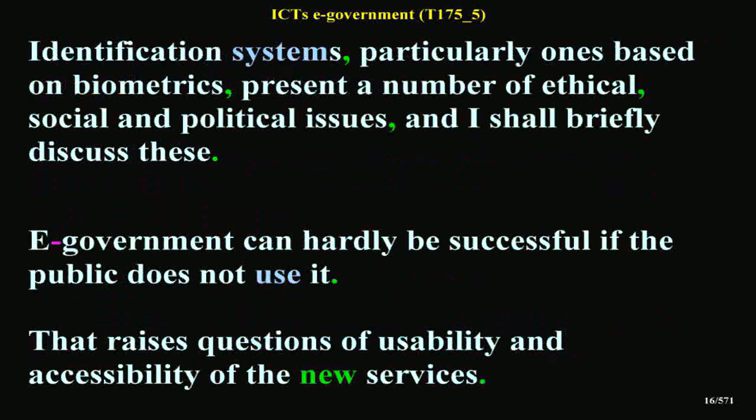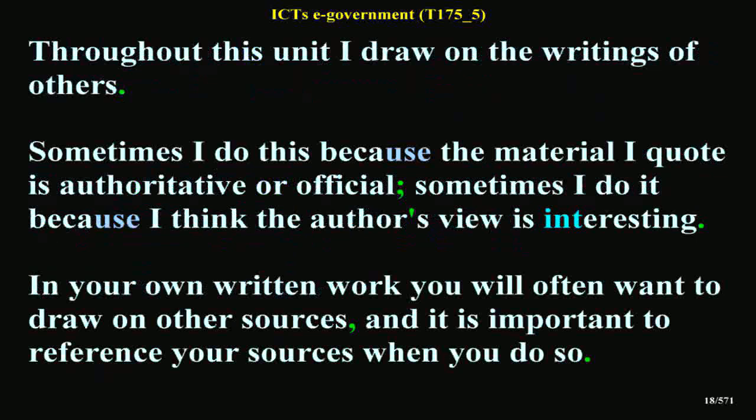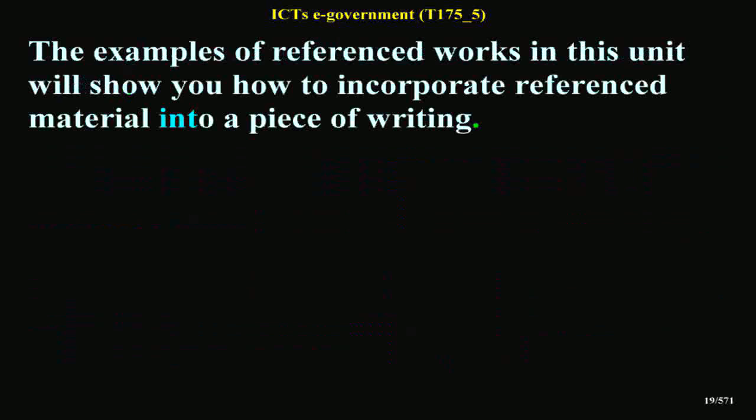E-Government can hardly be successful if the public does not use it. That raises questions of usability and accessibility of the new services. I shall also look at some of the factors that affect usability and accessibility. Finally, I shall look at some critical views about E-Government and at proposals for using ICTs to change radically the relationship of government and public. Throughout this unit I draw on the writings of others — sometimes because the material I quote is authoritative or official, sometimes because I think the author's view is interesting. In your own written work you will often want to draw on other sources, and it is important to reference your sources when you do so.